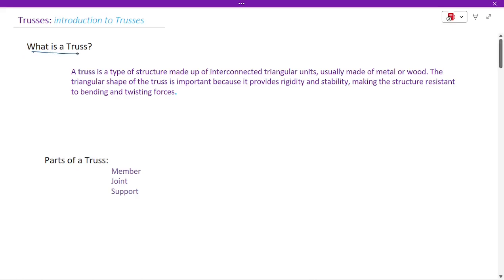A truss is a type of structure made up of interconnected triangular units, usually made of metal or wood. The triangular shape of the truss is important because it provides rigidity and stability, making the structure resistant to bending and twisting forces.